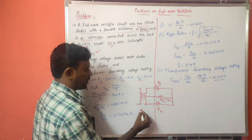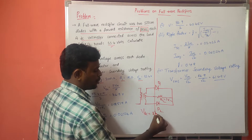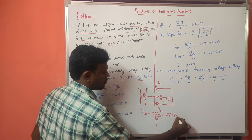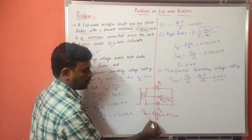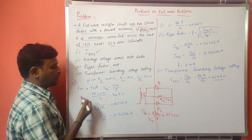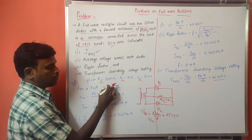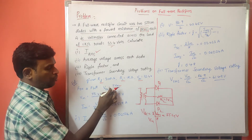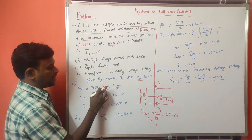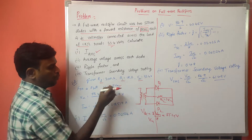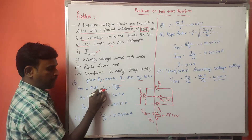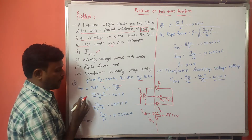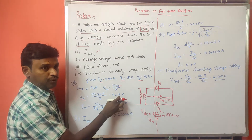VDC for a full wave rectifier is equal to 2Vm by Pi, and it is given as 55.4 volts. From this we can find out Vm. So Vm equals VDC multiplied by Pi by 2, that is 55.4 multiplied by Pi over 2. The maximum voltage comes out to be 86.9 volts.